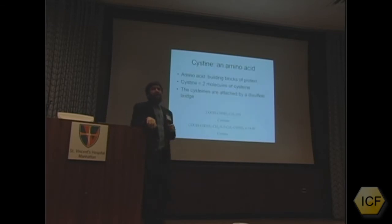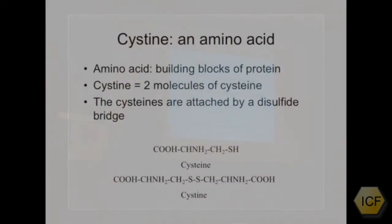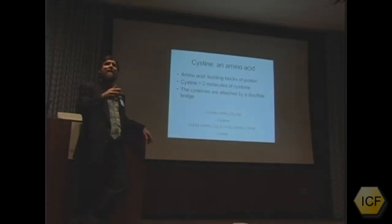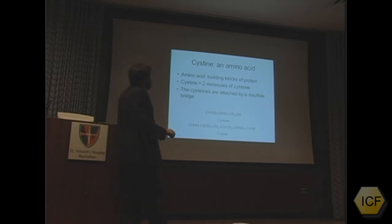Now cysteine, to get specifically to what we're interested in here today, is an amino acid. Amino acids are building blocks of proteins. Every protein, like albumin as an example, is made of long chains of amino acids, and cysteine is simply one of those amino acids.